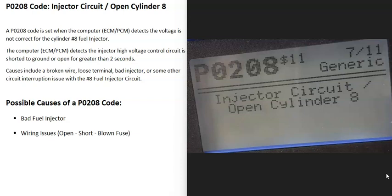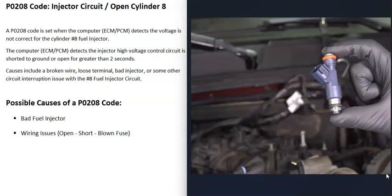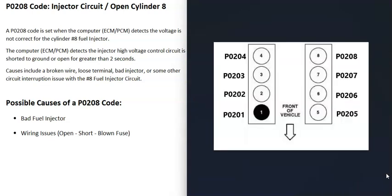Today I'm talking about a P0208 code — what it is and how you could go about fixing it. A P0208 code is an injector circuit open, cylinder eight. Each cylinder on the engine has a fuel injector injecting fuel into it. When you get this P0208 code, the computer is seeing a problem with the fuel injector on cylinder number eight. If you google your engine's cylinder location or firing order, you can find out which cylinder is number eight, since there are differences between engines.